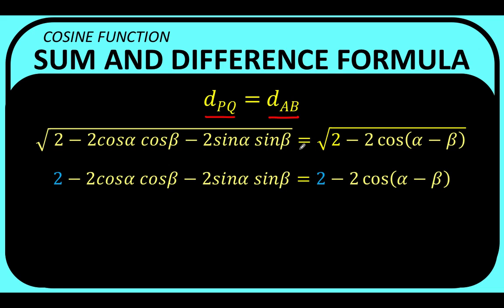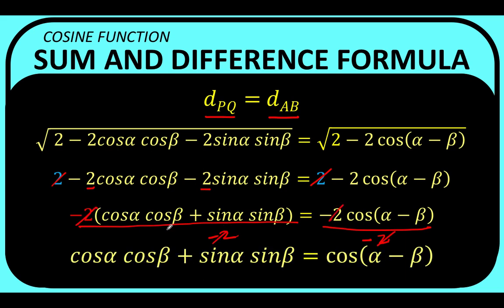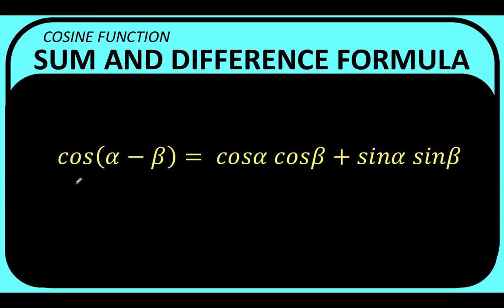Squaring both sides to eliminate the radical symbol, we notice there is a common factor of 2 on both sides which we can cancel. Factoring out negative 2 and dividing both sides by negative 2, we arrive at cosine alpha cosine beta plus sine alpha sine beta equals cosine(alpha minus beta). This is our difference identity for the cosine function: cosine(alpha minus beta) equals cosine alpha cosine beta plus sine alpha sine beta.